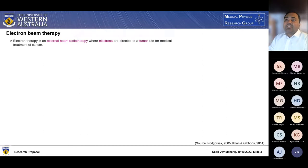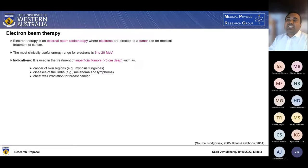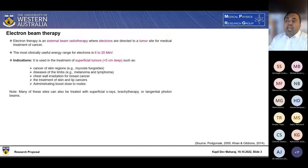Electron beam therapy. Electron therapy is an external beam radiotherapy where electrons are directed to a tumor site for medical treatment of cancer. The most clinically useful energy range for electrons is 6 to 20 MeV. In terms of clinical application, it is mostly used for the treatment of superficial tumors, which are less than 5 centimeters deep, such as cancer of the skin region, for example, mycosis fungoides, disease of limbs such as melanoma and lymphoma, chest wall irradiation for breast cancer, the treatment of skin and lip cancer, and adenocytating boost dose to nodes. Many of these sites can be treated with superficial x-rays, brachytherapy, or tangential photon beam. But why we choose some of these cancers treatment for electron therapy is because of these key characteristics which I'm going to mention now.